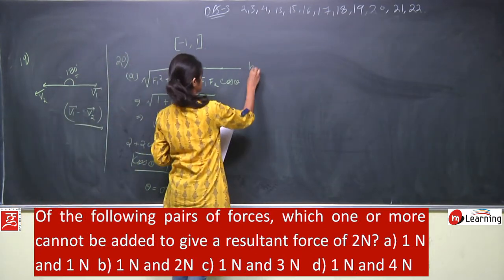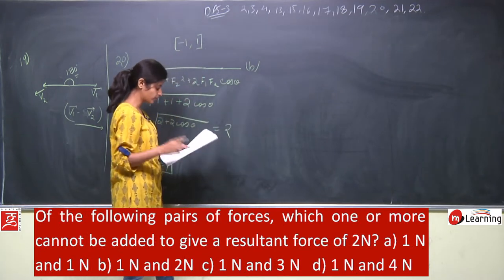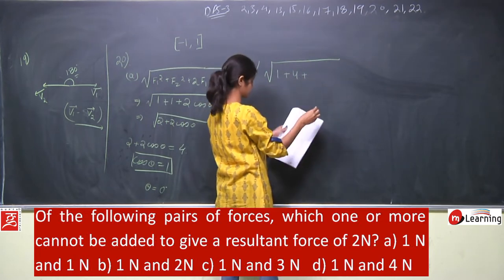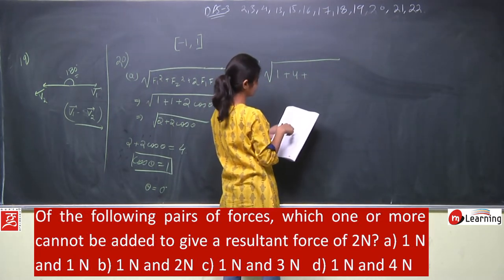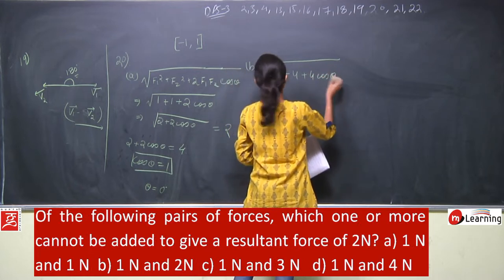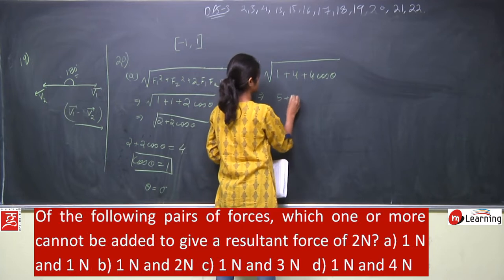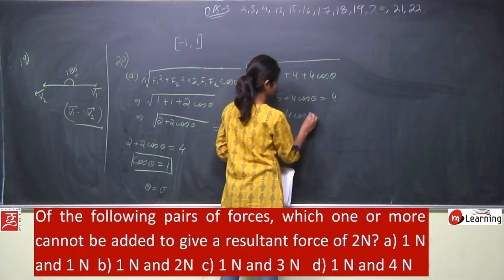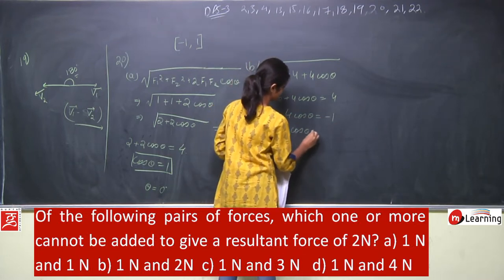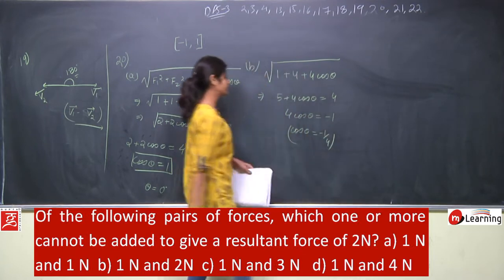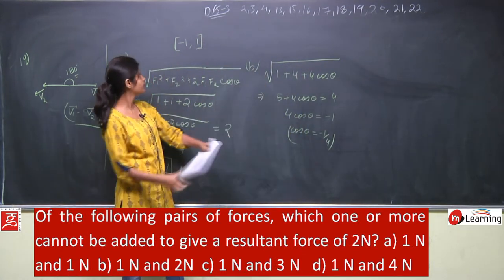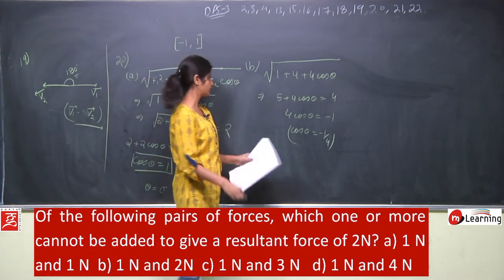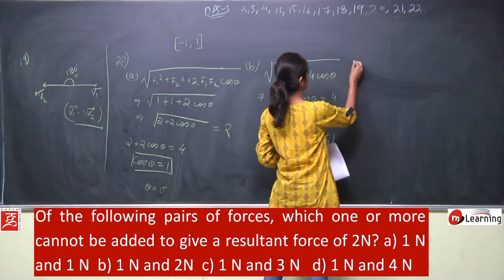Second pair: 1 newton and 2 newton. The expression becomes √(1 + 4 + 2·1·2·cos θ) = √(5 + 4·cos θ). Squaring: 5 + 4·cos θ = 4, so 4·cos θ = −1, giving cos θ = −1/4. Since −1/4 lies between −1 and 1, this value is acceptable. The second pair's resultant can also be 2 newtons.